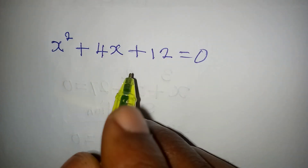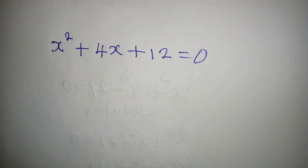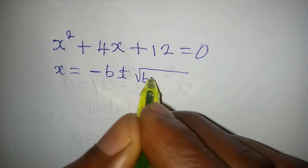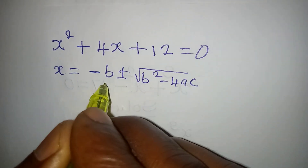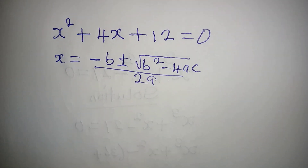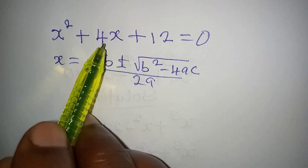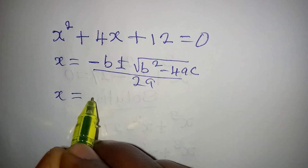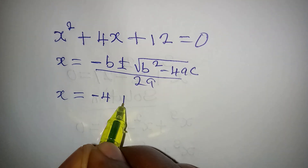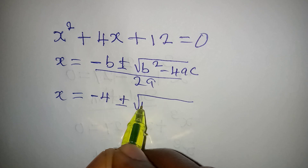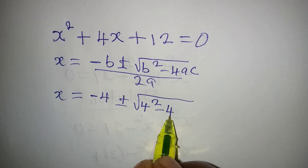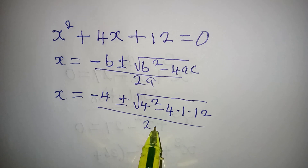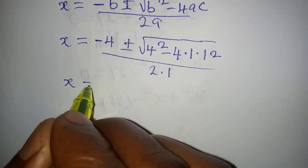We solve x² + 4x + 12 = 0 using the quadratic formula: x = (−b ± √(b² − 4ac)) / 2a. Here a = 1, b = 4, and c = 12. Substituting, x = (−4 ± √(4² − 4 × 1 × 12)) / (2 × 1).